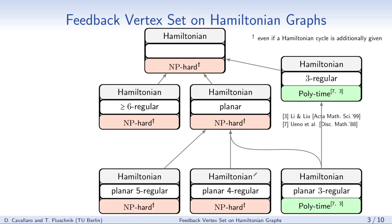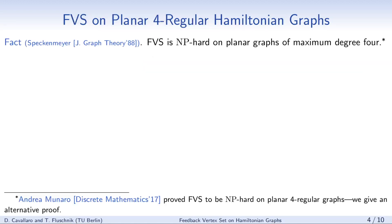In this talk, I would like to give some insight into how we obtained the NP-hardness results for planar 4-regular Hamiltonian graphs. The NP-hardness proof starts from the fact that feedback vertex set is NP-hard on planar graphs of maximum degree 4. In the first step, we turn this graph into a planar 4-regular graph, and in the second step, we turn it into a planar 4-regular Hamiltonian graph.